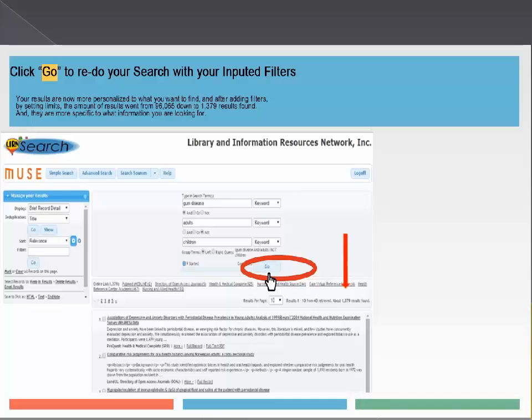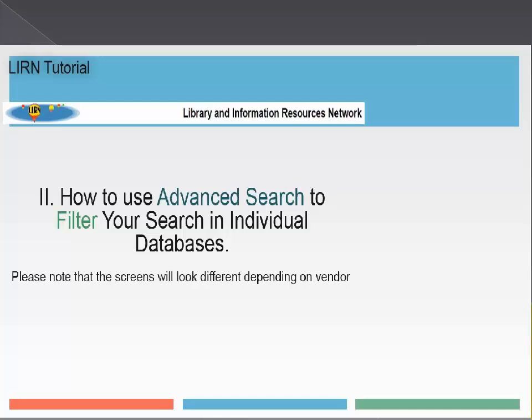So far we have covered all the search options and how to conduct a basic and an advanced search through the LIRN Search box and platform. Now we are going to take a look at a couple of individual databases. When one searches through the LIRN Search box, keep in mind the results come from all of the selected databases you have chosen. Now you will see the option on how to select a particular database to research in by subject.